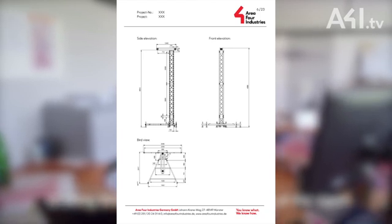In the second part of the calculation, the mathematical proofs are listed, which are usually only understandable for engineers. A static calculation is usually checked by another engineer, especially if the object has a certain size — the so-called dual control principle applies here.